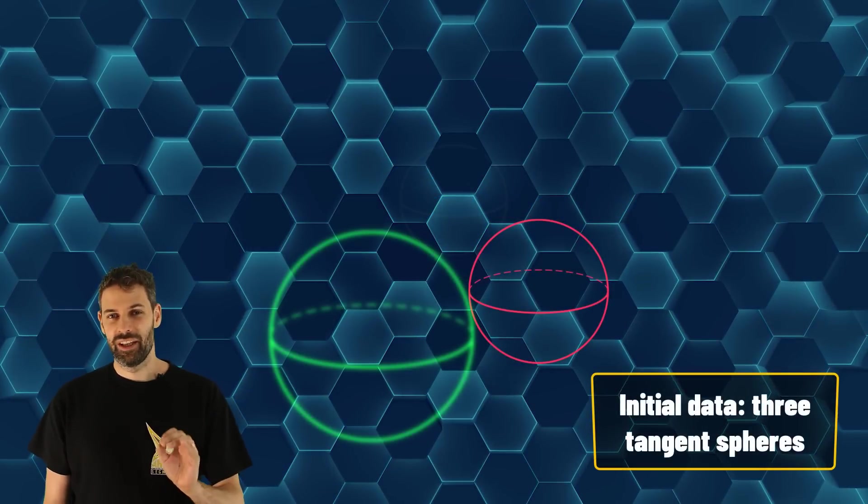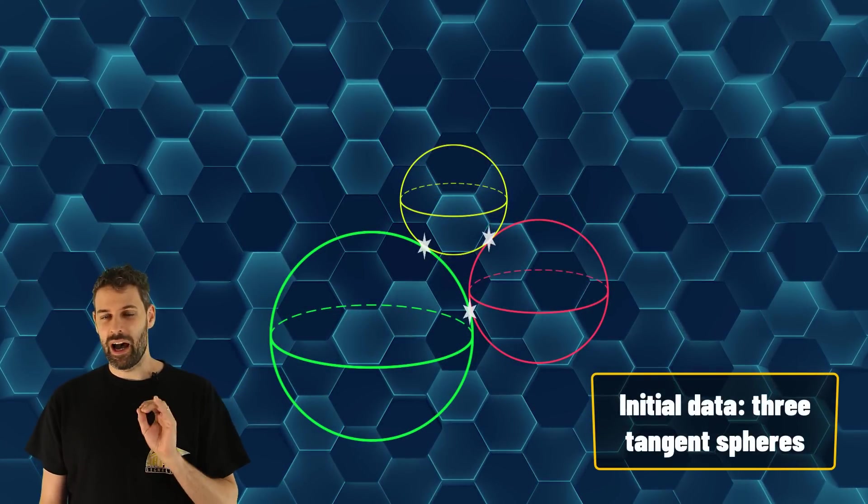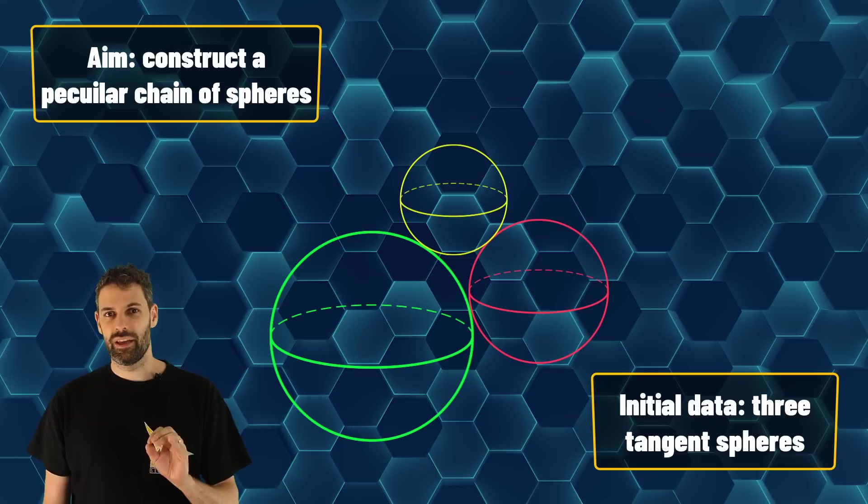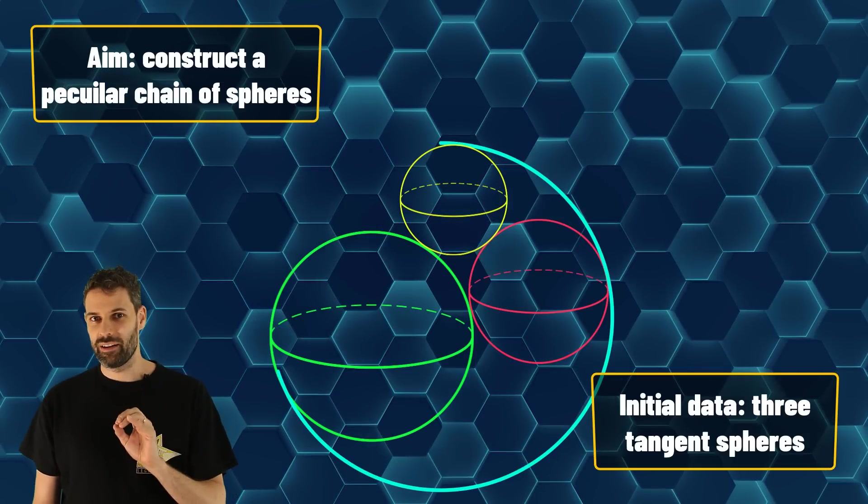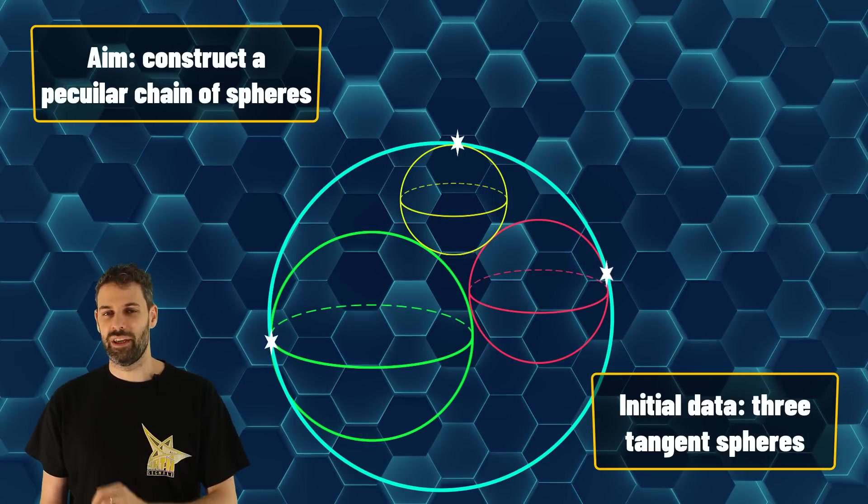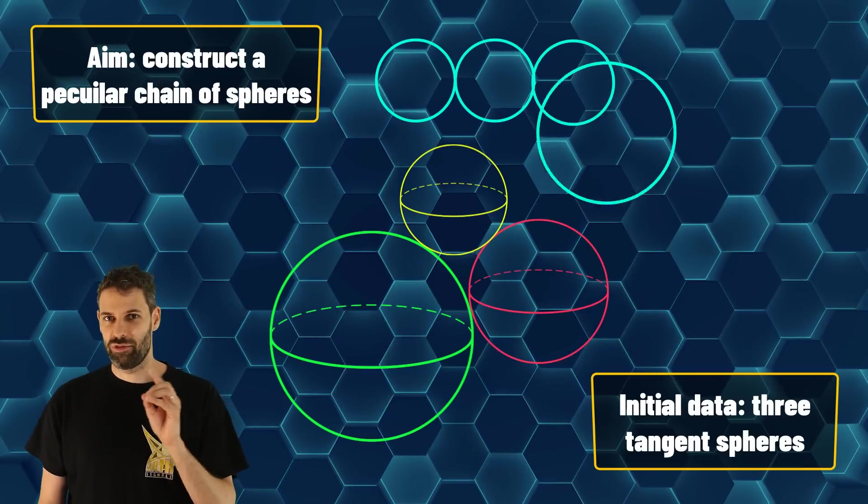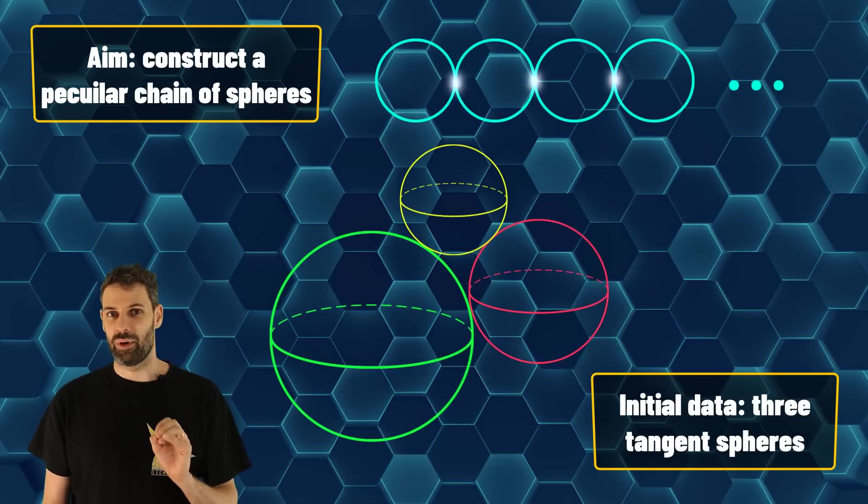Fix three spheres tangent to each other. Our aim is to construct another chain of spheres such that every sphere is tangent to the initial three and the next sphere in the chain is tangent to the previous one.